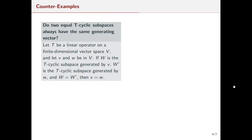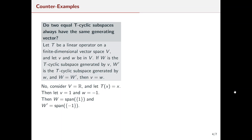Now let's look at some counterexamples. If we have a finite dimensional vector space V with a linear operator T, and we have two T-cyclic subspaces that are equal to each other, do they necessarily have the same generating vector? We can see this is not the case if we consider V to be just the real numbers, dimension one, and let T be the identity map. Then taking vectors v equal to 1 and w equal to −1, both spans are just the real numbers — so the spaces are equal, but the generating vectors are not.